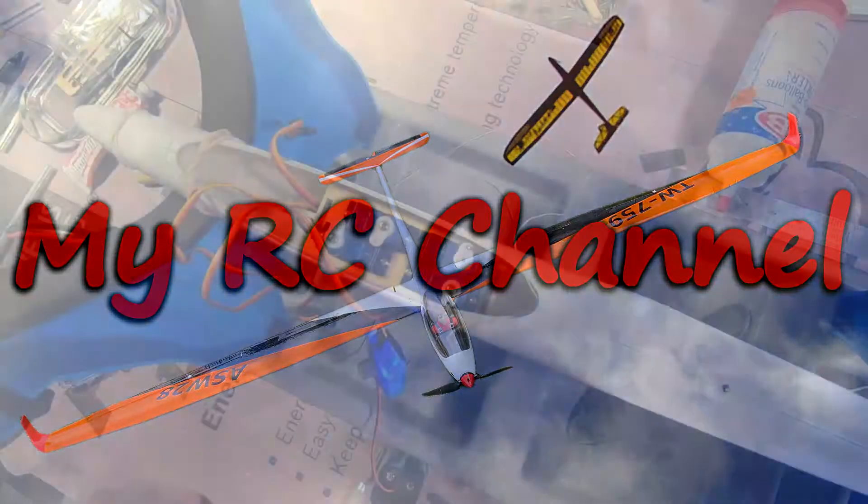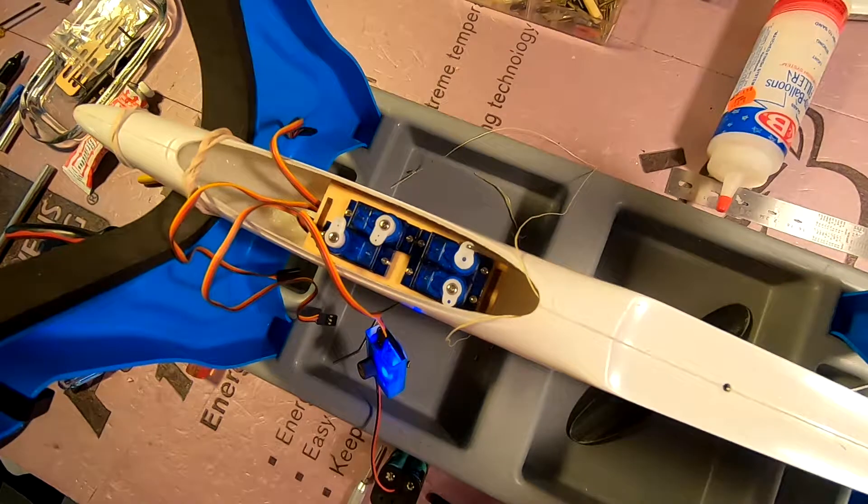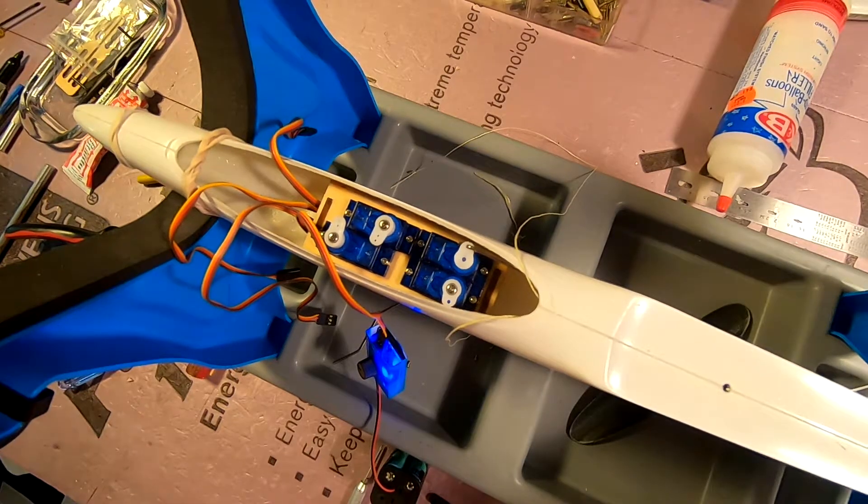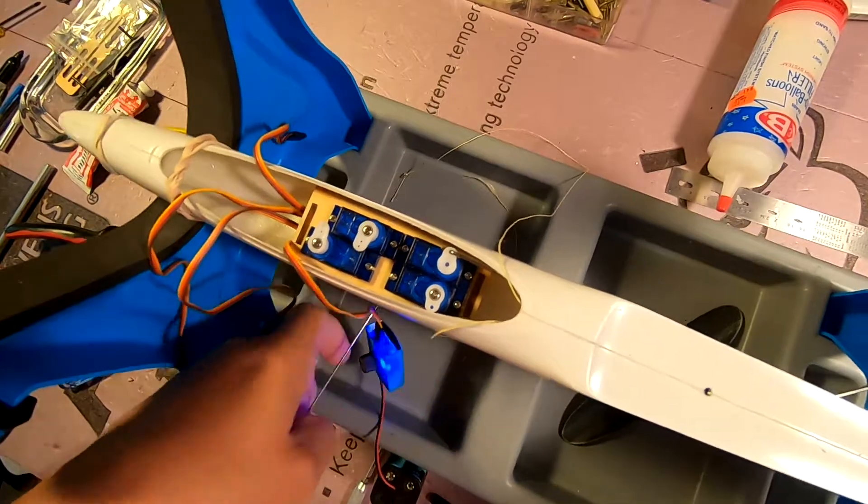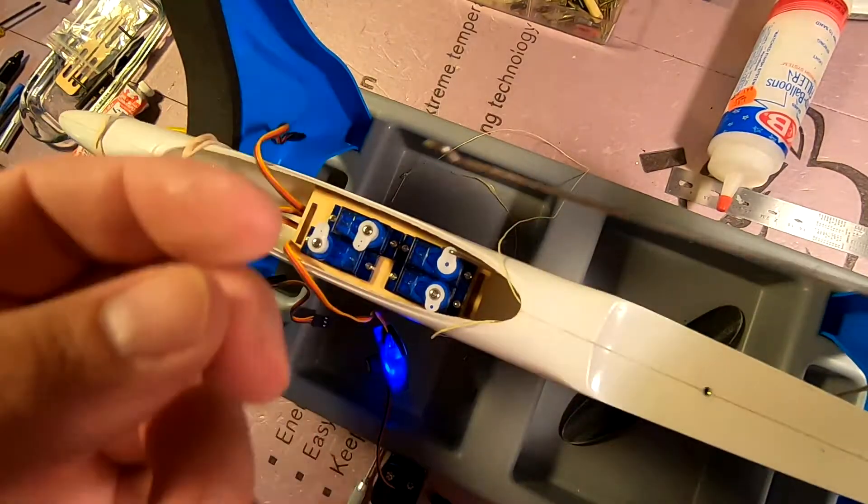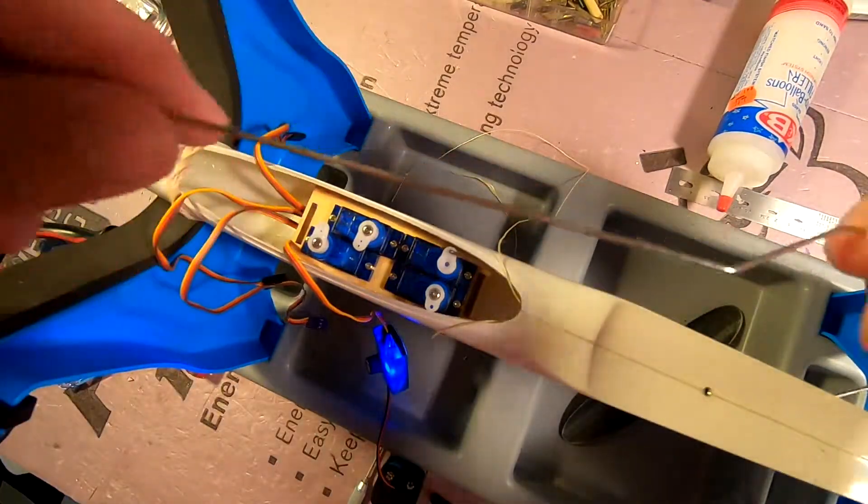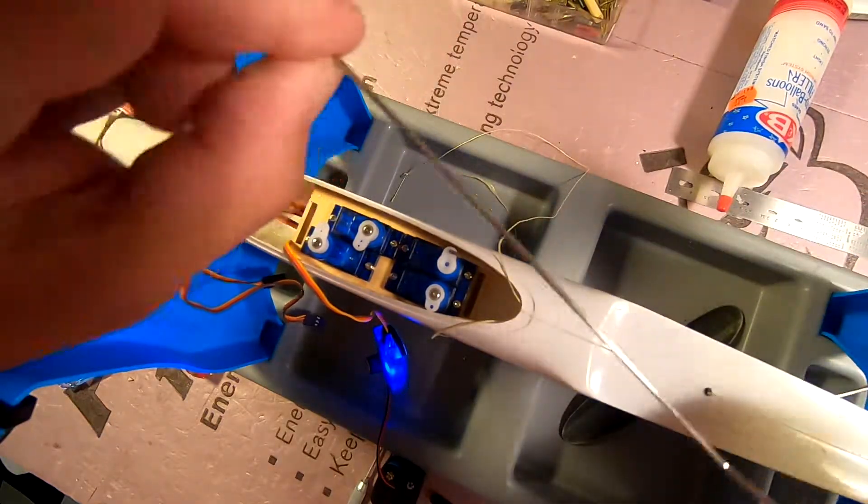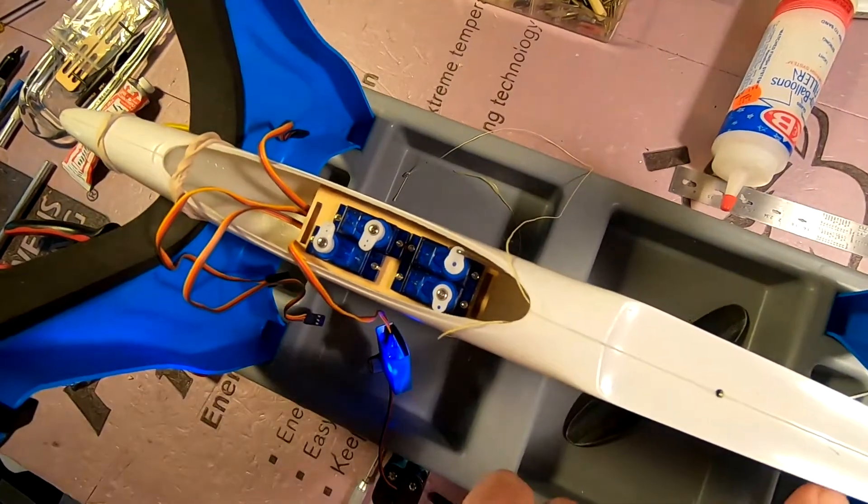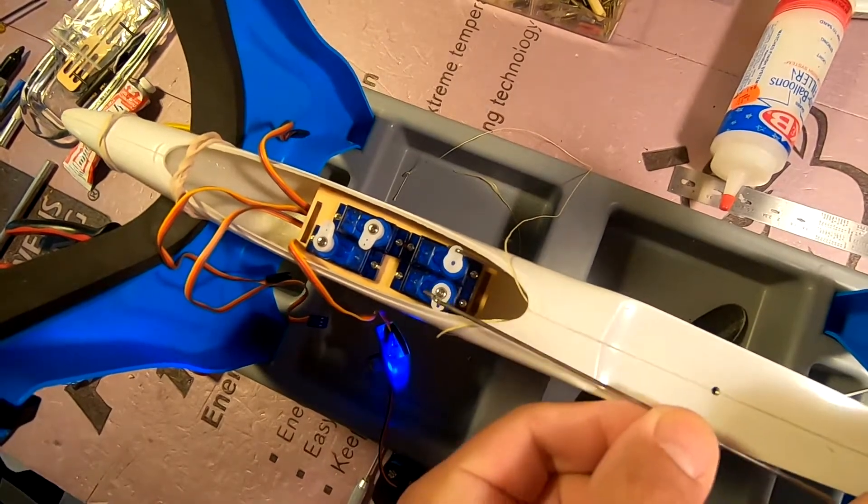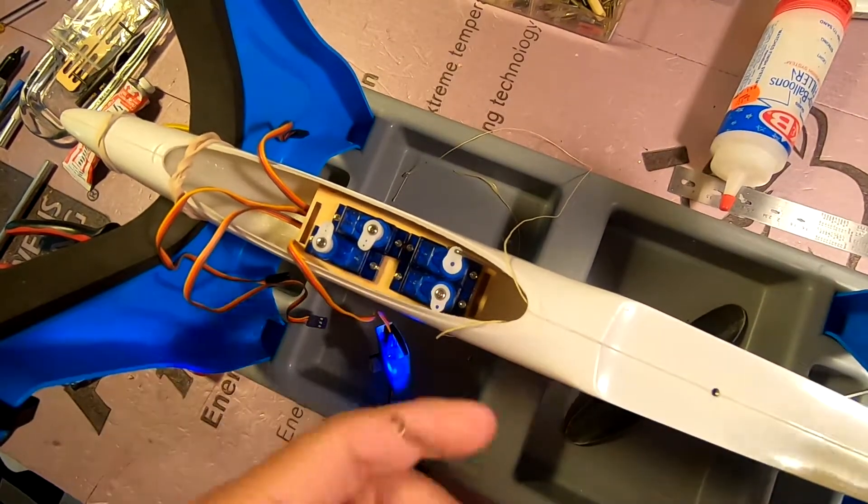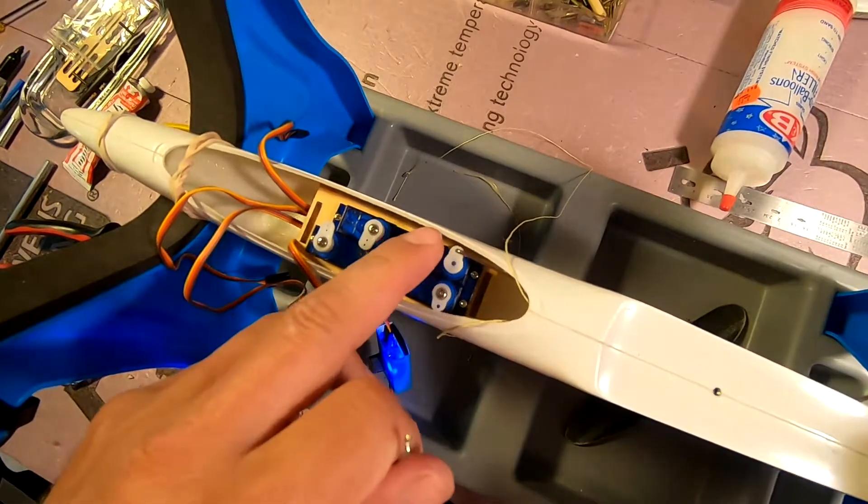Hi, I'm CJ and this is my RC channel. I'm working on the linkages for the ailerons. The ailerons function off of two rods that are shaped like this - they're just mirrors of each other. They slide in through slots in the fuselage and go to these two servos.